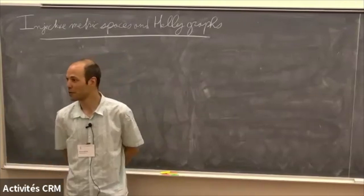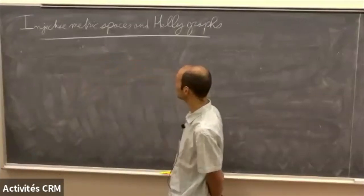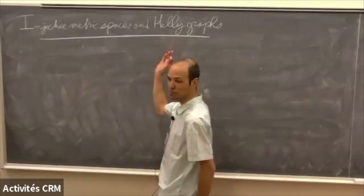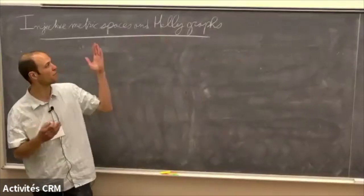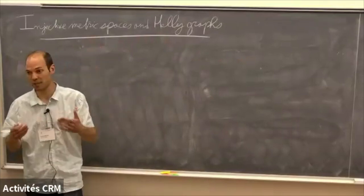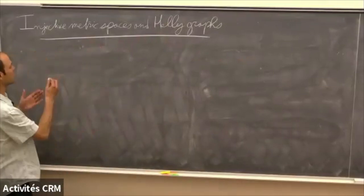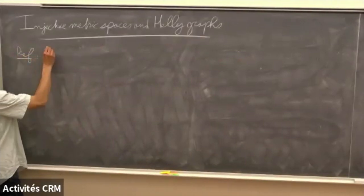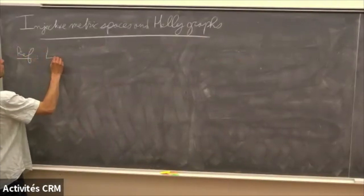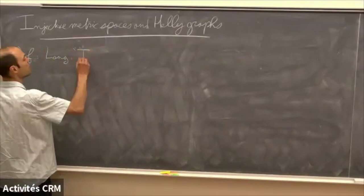Thank you very much for the opportunity to give this mini course. I will talk about two objects: injective metric spaces and heligraphs, which are sort of injective metric spaces with a cell structure on them. I will start by giving some references; there is a beautiful article by Horselong which is called 'Injective'.